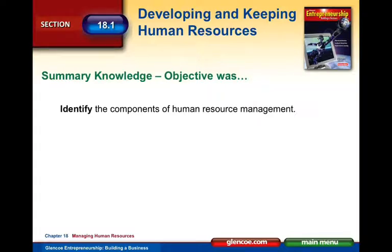So that's 18.1. The objective was to identify the components of human resource management: recruiting and screening employees, managing unions, overseeing employee training and development, overseeing pay and benefits, resolving day-to-day problems, ensuring equal opportunity and meeting applicable laws, and handling employee terminations. This is an important introduction leading into Module 18.2 on motivating people. The HR function is absolutely critical in any organization. Thanks, and we'll see you real soon.